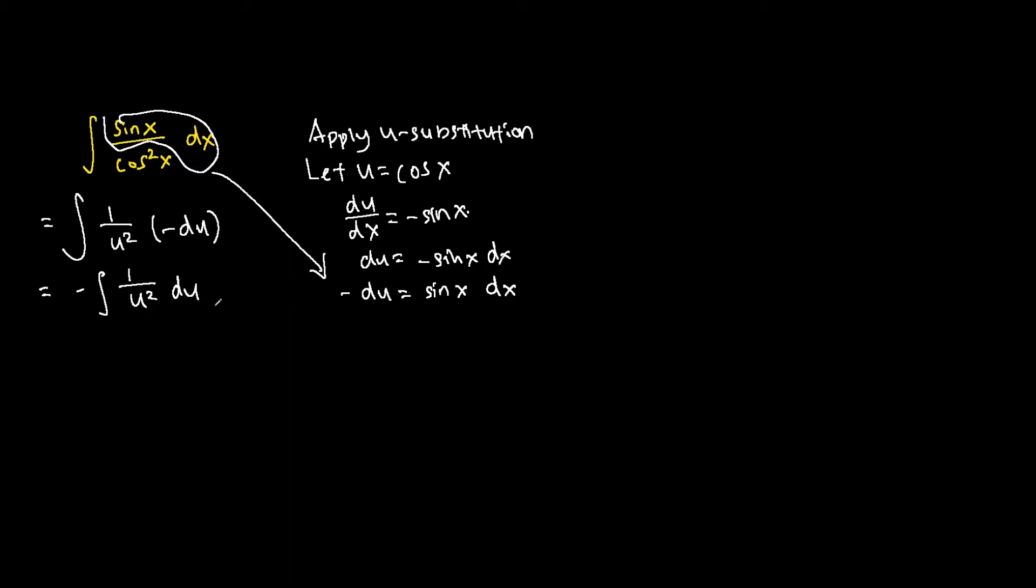The next thing we do, we apply the power rule which tells us that the integral of u to the power of a du is equivalent to u to the a plus 1 over a plus 1, under the condition that a is not equivalent to negative 1. We change this fraction into an indices form so that it will be clearer for you to see how the power rule is applied.